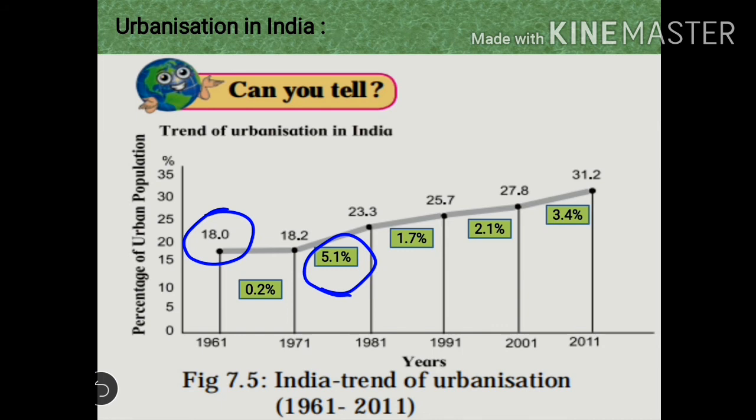The next question is: in which decade was the growth of urbanization the lowest? The lowest urbanization growth was in the decade of 1961 to 1971, at only 0.2%. The following question asks what was the growth in percentage of urbanization between 1961 to 1971, and the answer is 0.2%.